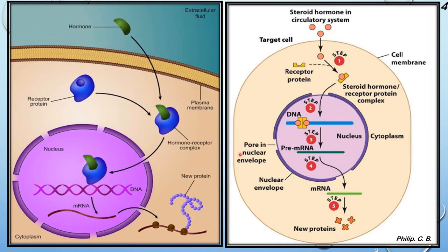A second image shows a steroid hormone in the circulatory system entering the cell, forming a steroid hormone-receptor protein complex that enters the nucleus. The DNA forms pre-mRNA in the nucleus, which then moves from the nucleoplasm into the cytoplasm where the next step is formation of the new protein.